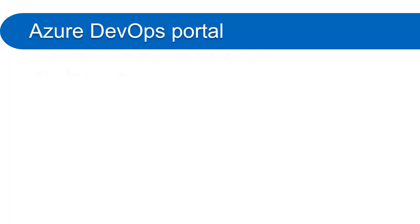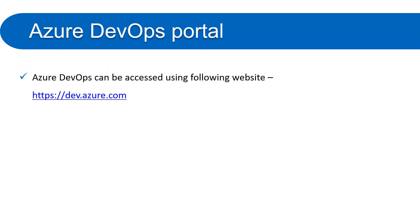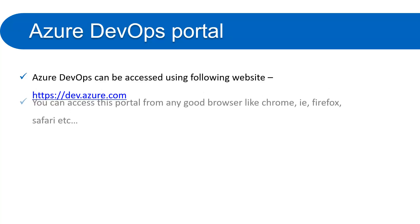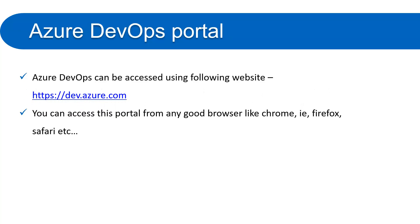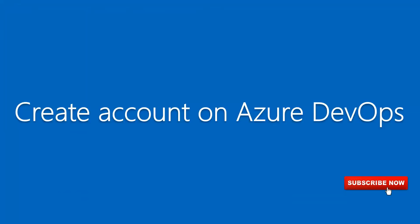The Azure DevOps portal can be accessed using the URL dev.azure.com. You can access this portal from any good browser like Chrome, IE, Firefox, Safari, etc. Let's create an account on Azure DevOps and see how it works.